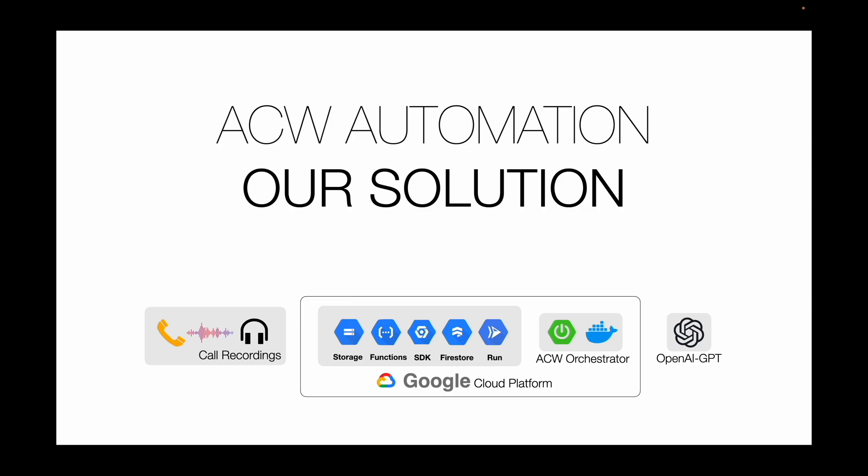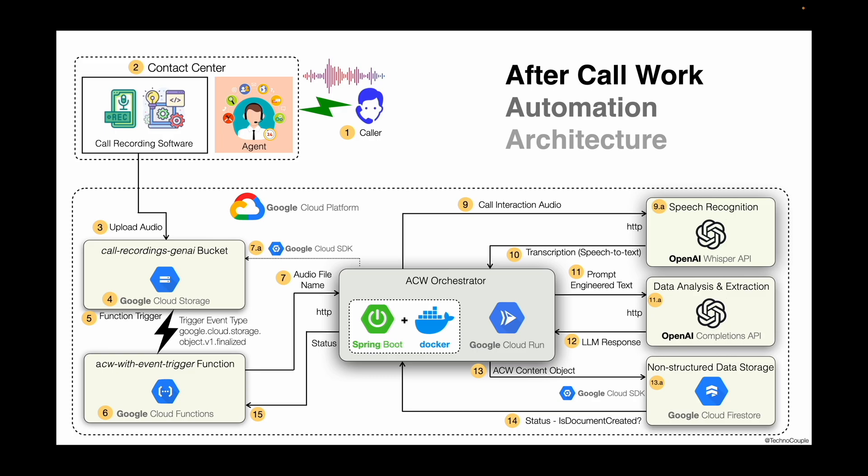Almost all call centers have call recording, either full call recording or agent-caller recording. More common is to have recording enabled post transfer, that is the conversation between the agent and the caller. This recording file is the key element for our solution. This is the basic architecture of ACW automation. We have leveraged Google Cloud Platform for this product.